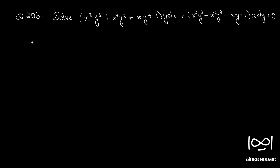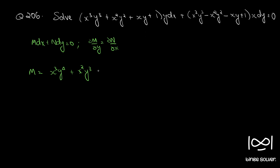The given equation is in the form M dx plus N dy equal to 0. So first we check whether the given equation is exact using the necessary and sufficient condition: ∂M/∂y = ∂N/∂x. Here M is x³y⁴ + x²y³ + xy² + y and N is x⁴y³ minus x³y² minus x²y plus x.